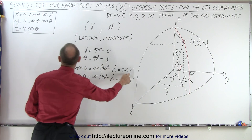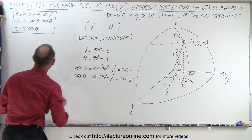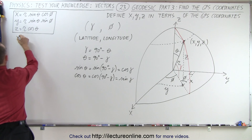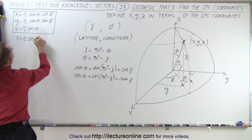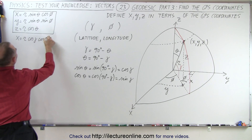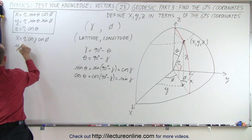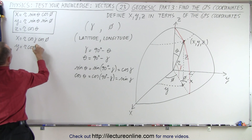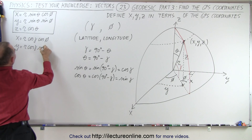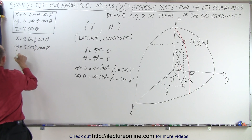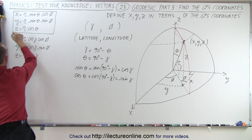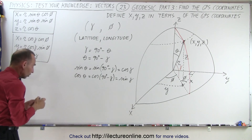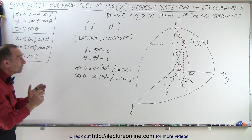This means we can write: x is equal to r times the cosine of lambda times the cosine of phi, and y is equal to r times the cosine of lambda times the sine of phi, and z is equal to r times the sine of lambda. So now we have the x, y, z coordinates converted to GPS coordinates.